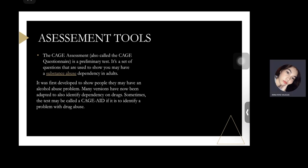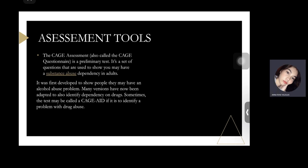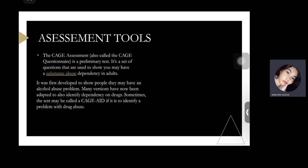The CAGE assessment is a four-item questionnaire used to screen for alcohol use disorder. The acronym CAGE stands for: C is for Cut down, A is for Annoyed, G is for Guilty, E is for Eye opener. The questions we ask are: C — Have you ever thought about cutting back on your drinking or having to stop? A — Have people annoyed you by criticizing your drinking? G — Are you feeling guilty about your drinking? E — Have you ever had a drink first thing in the morning to steady your nerves or get rid of a hangover?